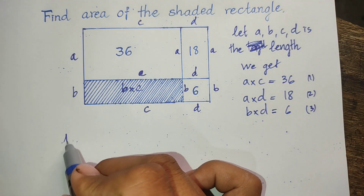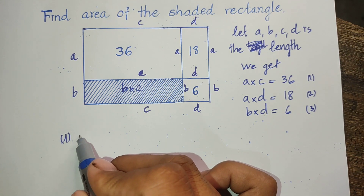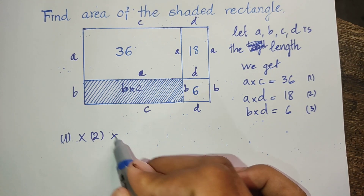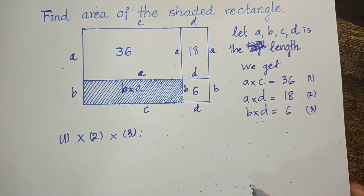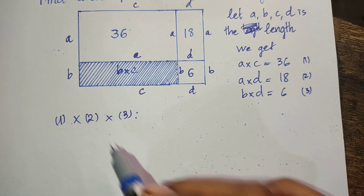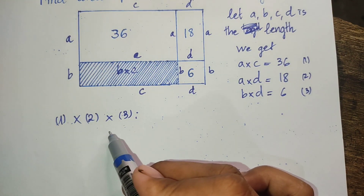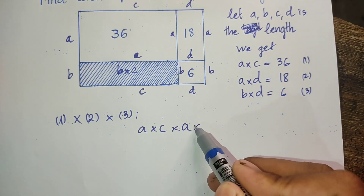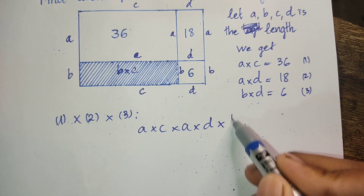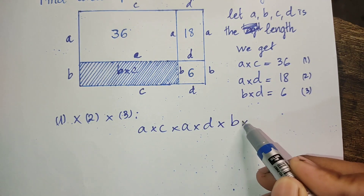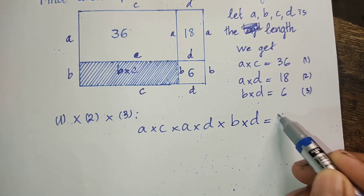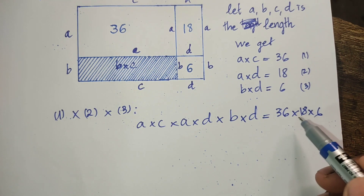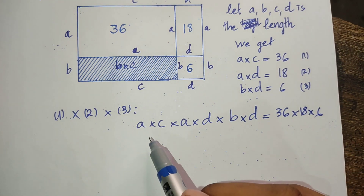First, second, and third: we get A multiplied by C, multiplied by S, multiplied by B — this is equal to 36, multiplied by 18, multiplied by 6.